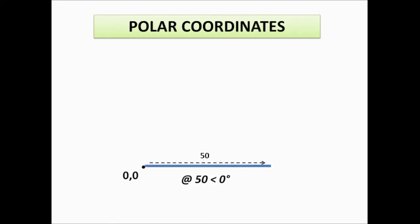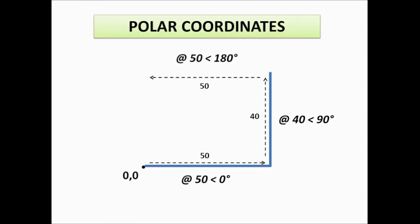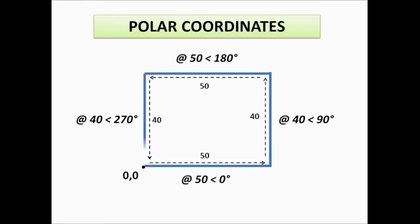Our line from our origin or starting point will go to the right since we use zero degrees. Then let's continue — say we need 40 units going up, the command will be at 40 less than 90. Say we want 50 units going to the left, the command will be at 50 less than 180. And lastly, 40 units going down, the command will be at 40 less than 270.